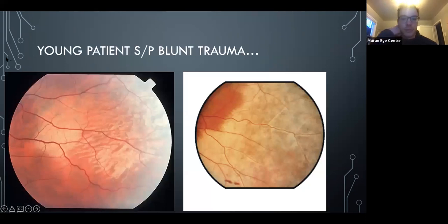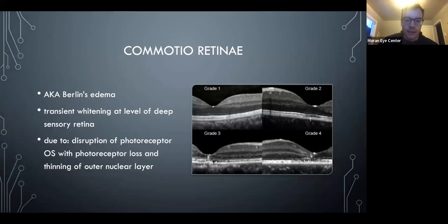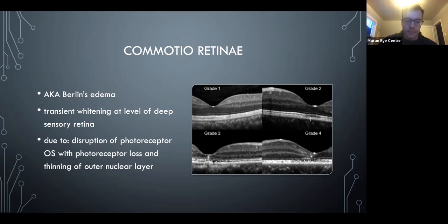So: young patient, blunt trauma, you see whitening of the retina. This is commotion retinae — also called Berlin's edema, though I don't think they'd ask that. It's transient, although it can leave some visual deficit in the area affected, especially if it's in the macula. One thing they do like to ask about is where the damage is: it's in the outer retina, with disruption of the outer segments, which can result in atrophy down the road.